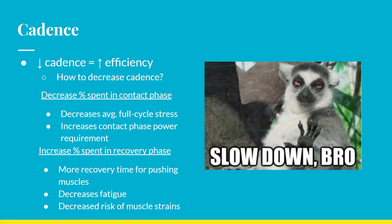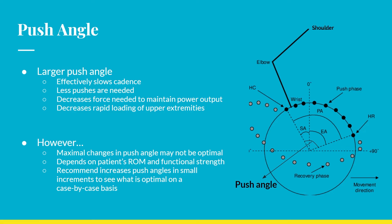However, for a given speed, the same amount of power must be applied to the handrim during each stroke. A decrease in cadence reduces the percent of the cycle spent in the contact phase, which increases push phase power requirements to maintain constant average stroke power. One way to offset the force requirement is to pair decreased cadence with a larger push angle, achieved through greater extension of the shoulders and elbows to reach further back, or greater shoulder and trunk flexion to reach further forward on the pushrim. This decreases the force needed to maintain constant power output and naturally slows cadence, and also means fewer pushes are needed to travel the same distance.